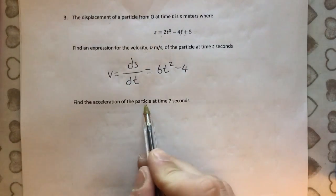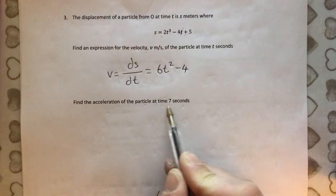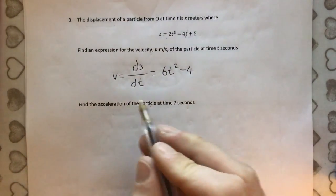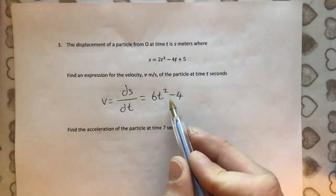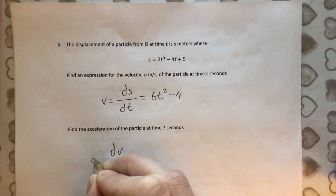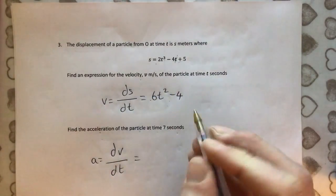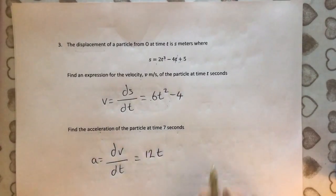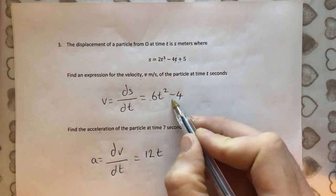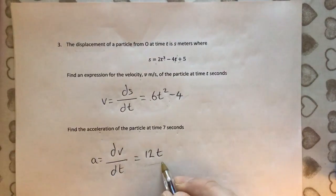Find the acceleration of the particle at time 7 seconds. Actually, that means t equals 7 seconds. Well, the acceleration, we need to differentiate it again. We need the second differential. So here we've got the first differential, the velocity. So dV by dt, which is the acceleration, is going to be the differential of this times the front by the power. So we get 12, reduce the power by 1. We just get t. Constants disappear. There's no t on it, so that whole thing just disappears. We just get 12t.